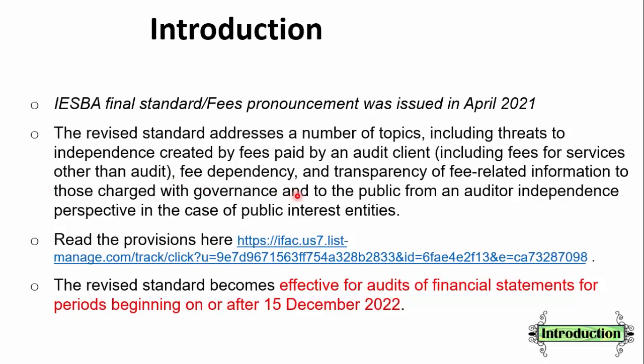You literally have to go through your engagement letter with the audit committee in detail, and there has to be full transparency of exactly what you'll be charging for. Also, if you are reporting to the public from an auditor independence perspective, that specifically applies in the case of public interest entities. But even for your non-PIEs, you still need to examine your threats to independence. It is effective for audits of financial statements for periods beginning on or after 15 December 2022.